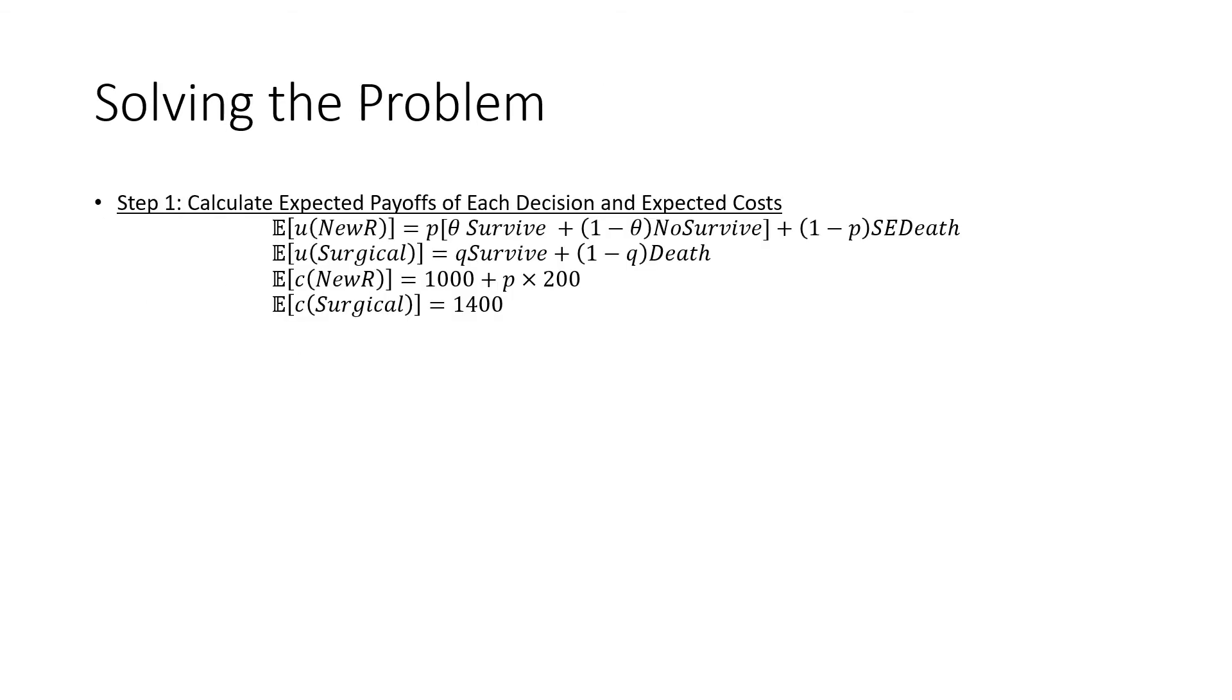Step number one is that we calculate the expected payoff of each decision and expected costs. We're just plugging them in, making sure that the probabilities here are working on each other because we have one probability that moves to another expected value. A thing that should be noted is that we should have only payoffs which are entering these as scalars.